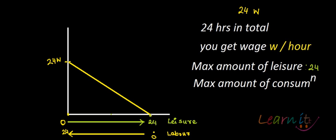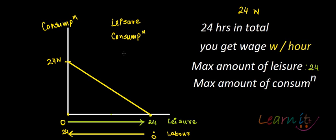This is the budget line. Now think about the slope of this budget line. There are two commodities here: leisure is one commodity and consumption of goods is the other. To make things simple, let's normalize the price of consumption to one. By normalizing the price of consumption goods, we're keeping leisure and labor in the spotlight, so we need to think about the price of leisure.